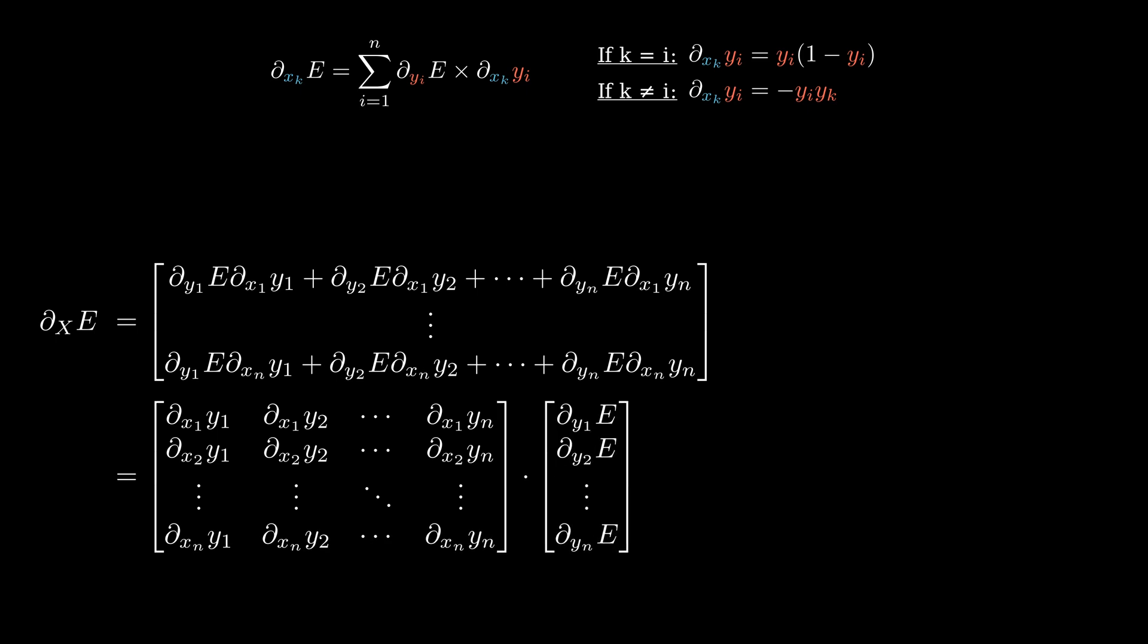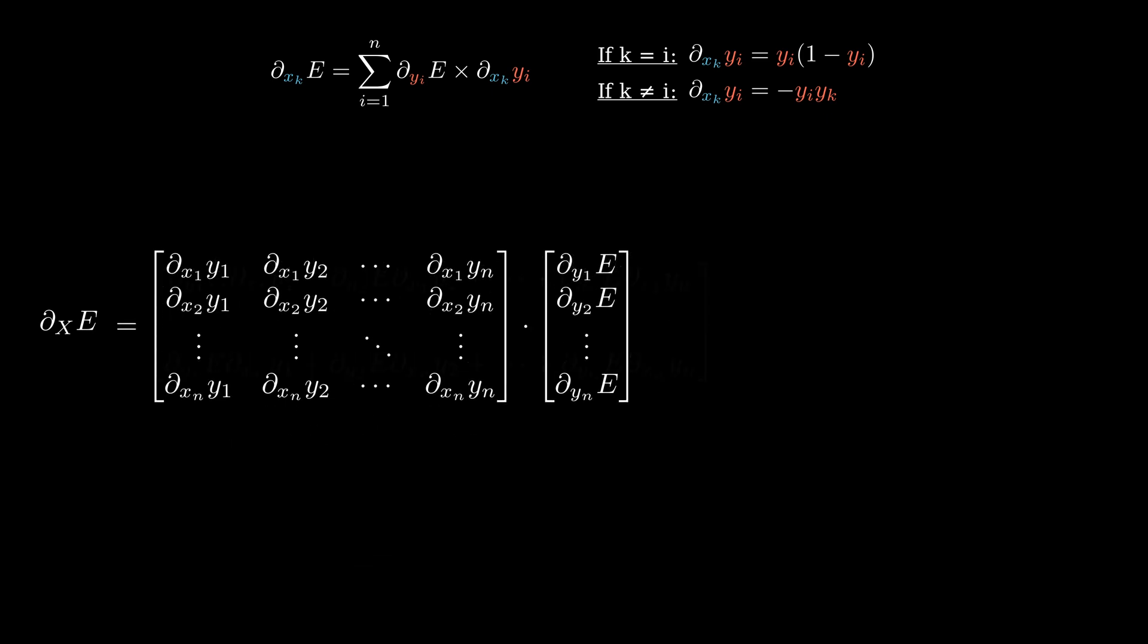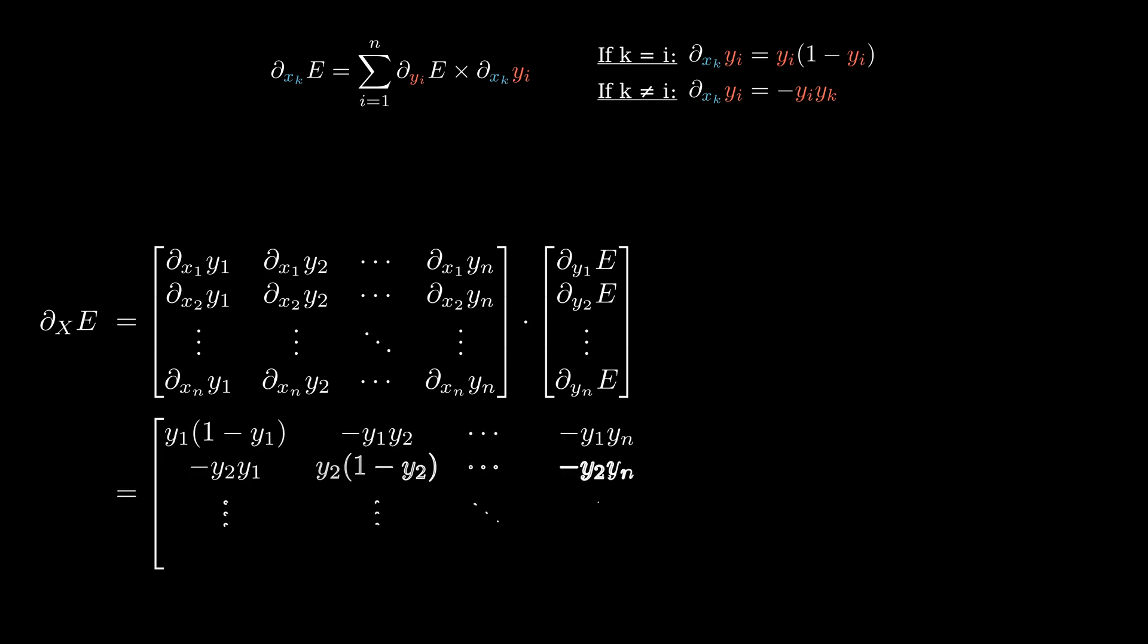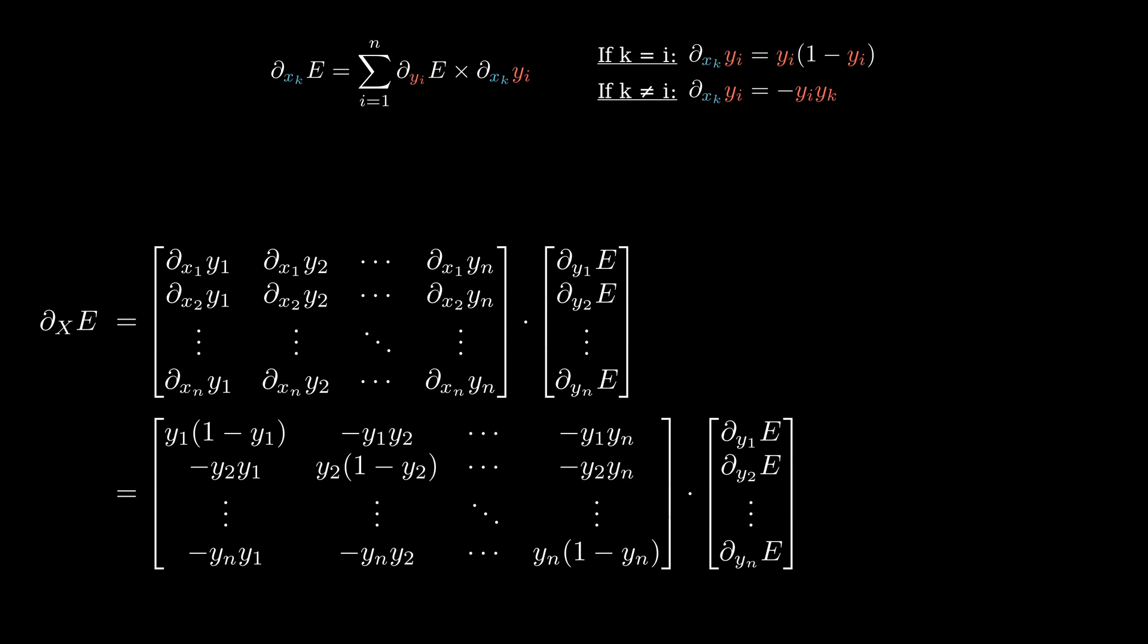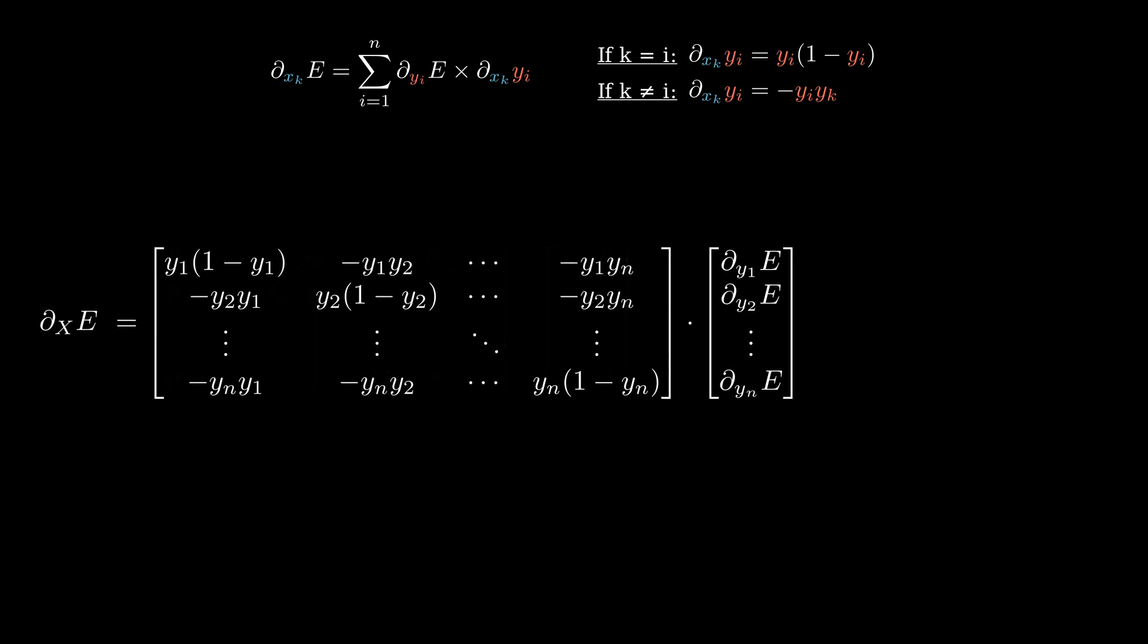The column vector that we revealed is nothing but the output gradient which is given during the backward step by the next layer. We can now replace each derivative of y with respect to x using the two formulas that we have on the top of the screen. Notice how we have special elements on the diagonal of the square matrix because of the condition we had on the indices.